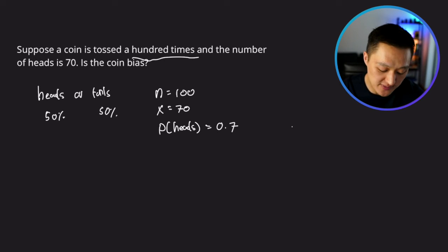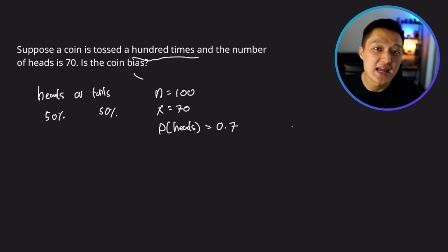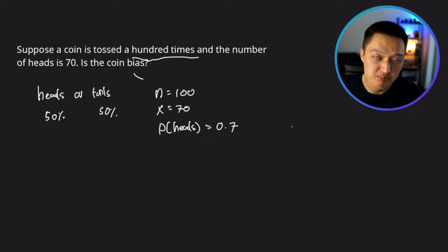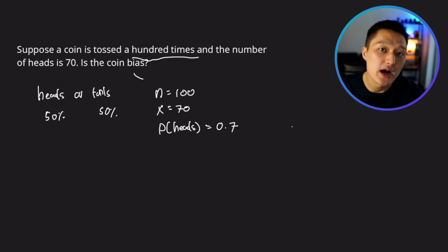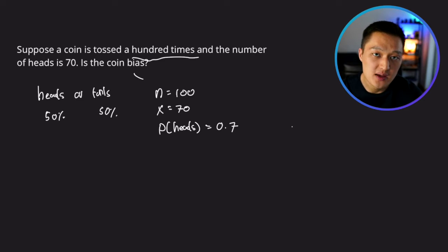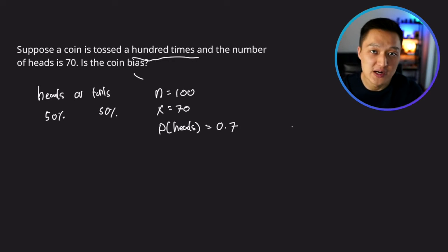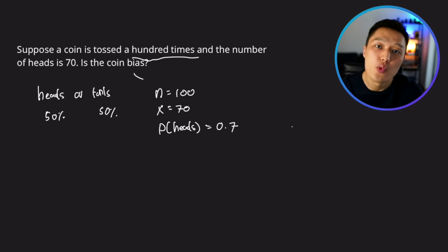The question asks: how do we determine if the coin is biased or not? A common but incorrect approach is using Bayes' theorem to compute the probability that a coin is biased or unbiased given 70 heads out of 100 trials. However, we're not trying to compute that probability — that would apply to Bayesian statistics. Instead, we're going to use a frequentist approach to evaluate whether this coin is biased.